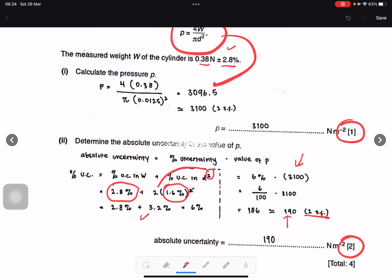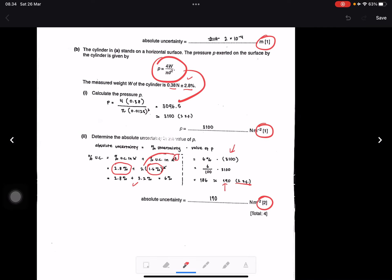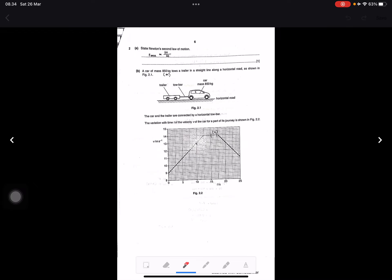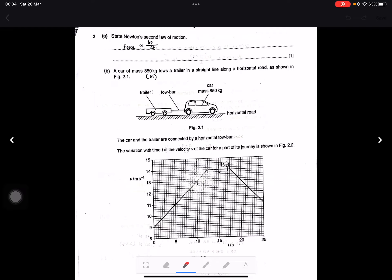Six percent times 3100, we get 190 newtons. This is also in two significant figures, so this is correct. We go to the next number, number two, about Newton's second law of motion.